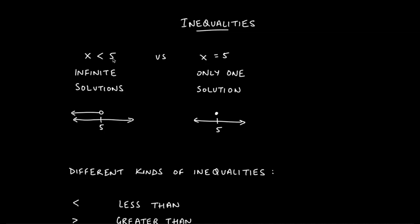Here's an example of x is less than 5 versus the times where we've solved equations and got x is equal to 5. When we got x equals 5, x could only be that one number. When we solved an equation and got one solution, we represented it as just x equals 5. If we were to use a number line to denote a solution of an equation, we would put a solid dot above the 5.